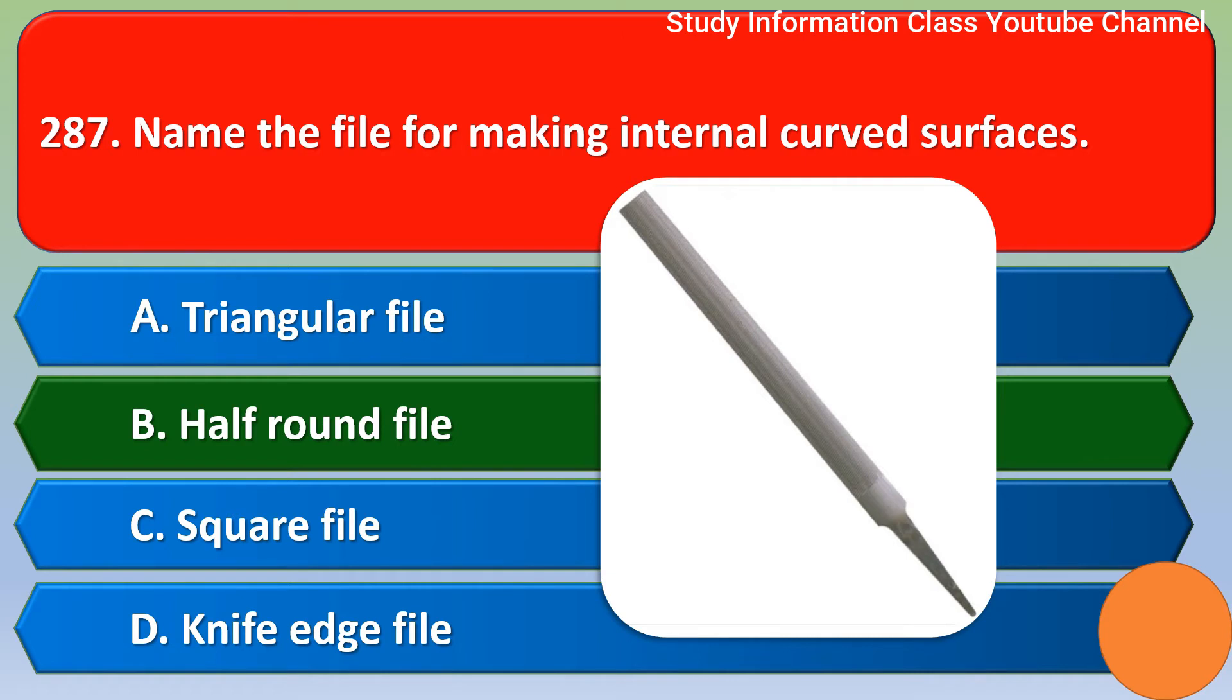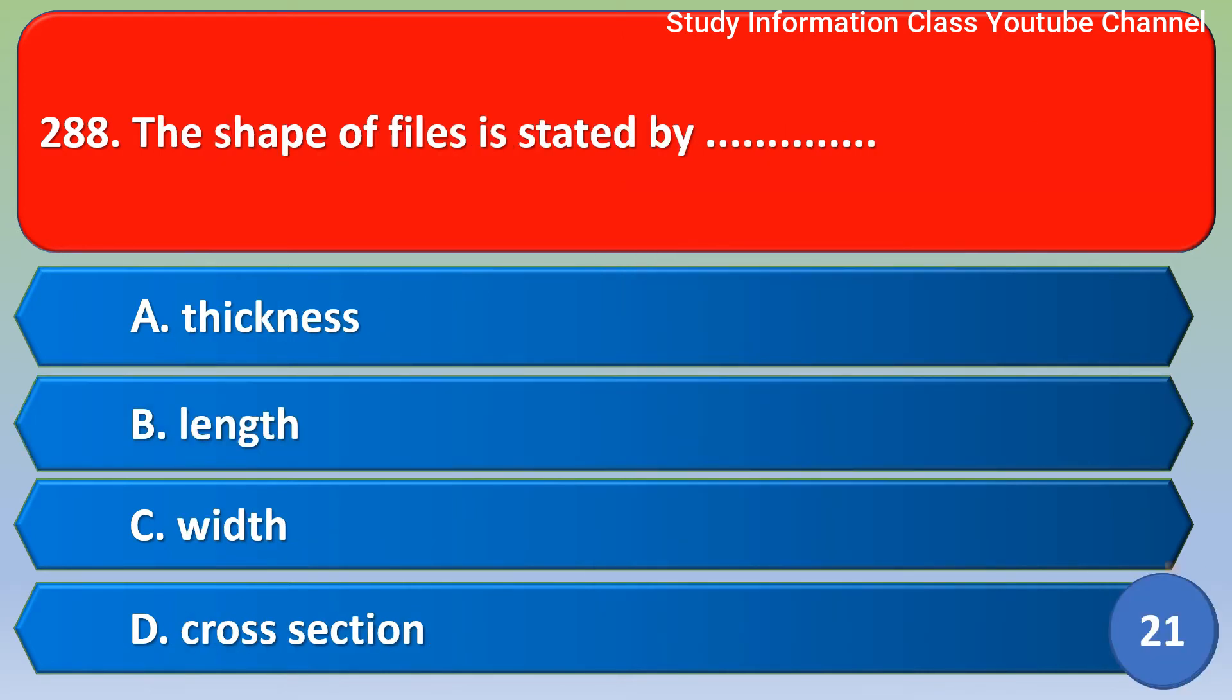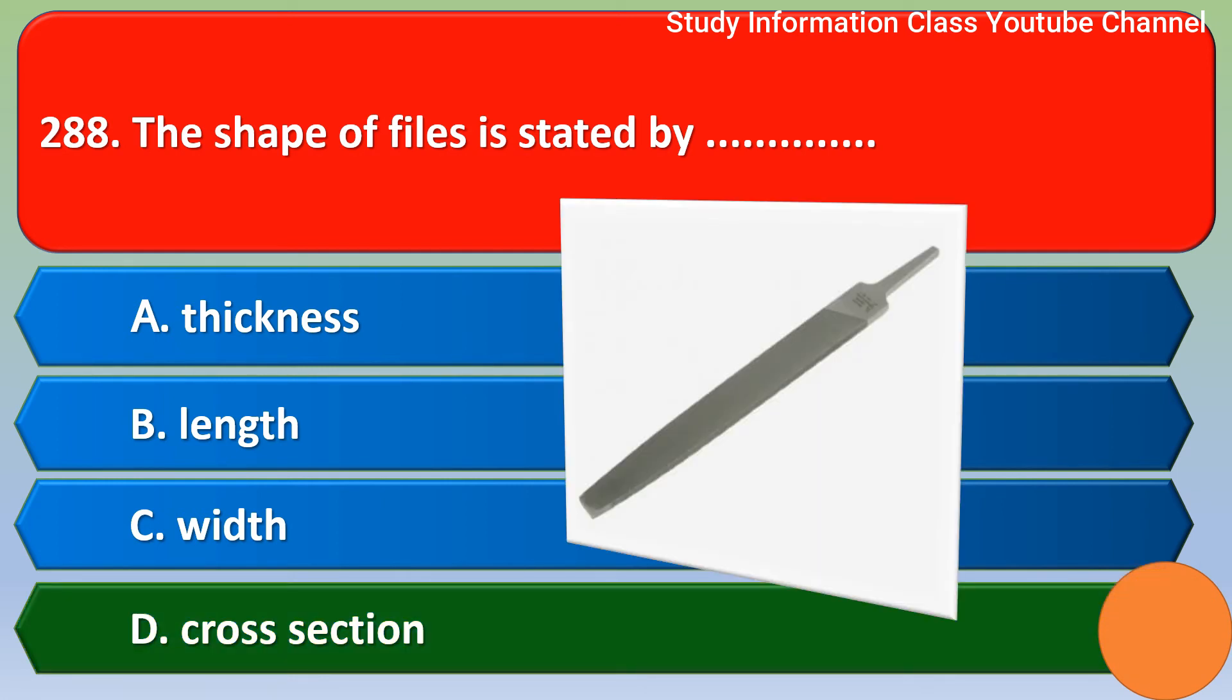The shape of files is stated by: Option A, thickness; Option B, length; Option C, width; Option D, cross-section. The right answer is Option D, cross-section.